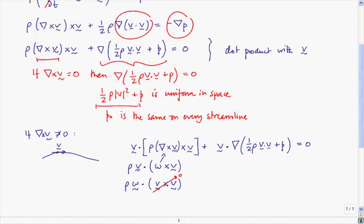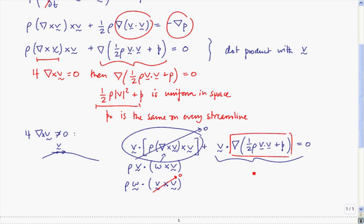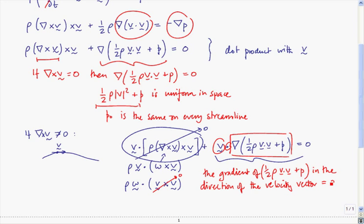So what we have in this case is that when we take the dot product with v, this term on the left-hand side is equal to zero, and what we get is just this term on the right-hand side equal to zero. Now let's look at this in more detail. We're saying here that the gradient of this function, half rho v dot v plus p, in the direction of the velocity vector is equal to zero. And this is just Bernoulli's equation along the streamline, because this is the stagnation pressure, and if I'd repeated it including gravity, that would be the total pressure or the Bernoulli constant.